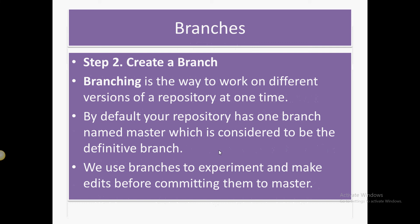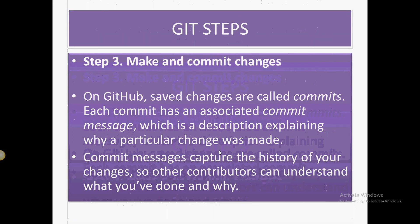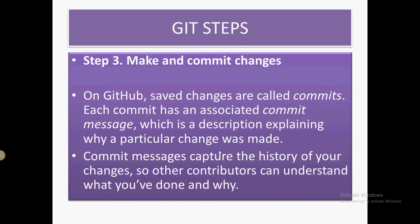A term related to Git is branching. Branching is the way to work on different versions. Suppose you have one version and you want to do some experimentation — instead of making changes in the main version, you create a branch. You do your experiments and make your changes, and if everything works out, you merge that branch into the master branch, making it available to all developers.